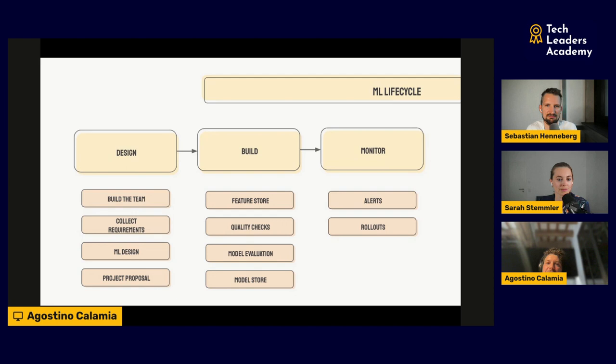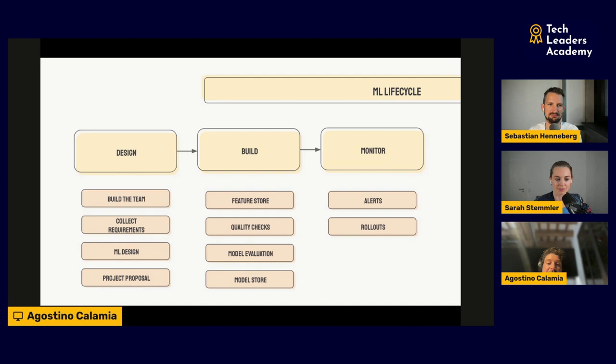Model evaluation has both a statistical part and a business part. You evaluate your model based on statistical performance — ROC, accuracy, etc. — but also ask how much business impact does it have? Do we want to increase revenue or reduce costs? Figuring out the key metrics and setting thresholds before you even build the model — that has to be done up front, written down, and everyone should align on it.